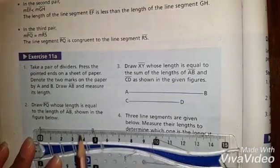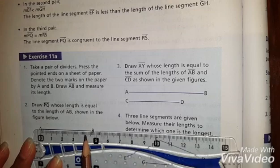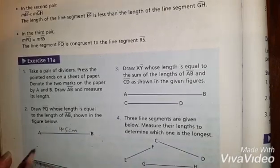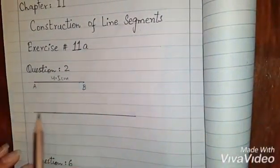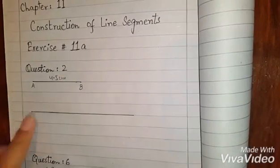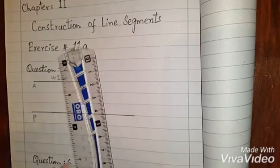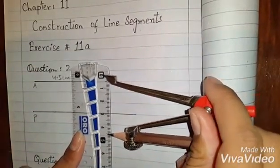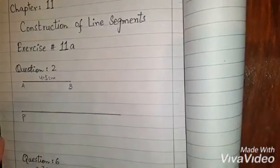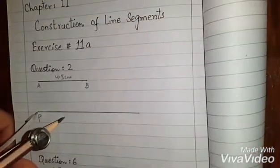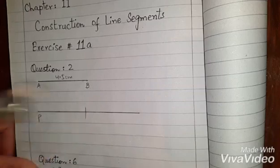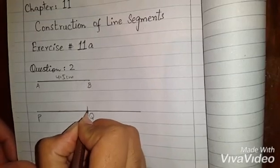We have 4.5 cm. We have drawn a line; here is point P and here is point B. We use a scale and a compass — we measure 4.5 cm, open the compass, place the metal point, and draw an arc at the mark. This 4.5 cm point is called our point Q. We have drawn line PQ of length 4.5 cm.